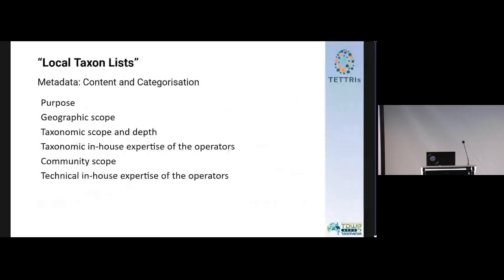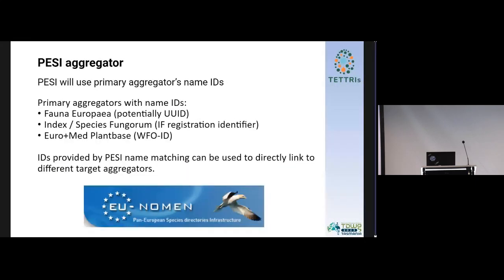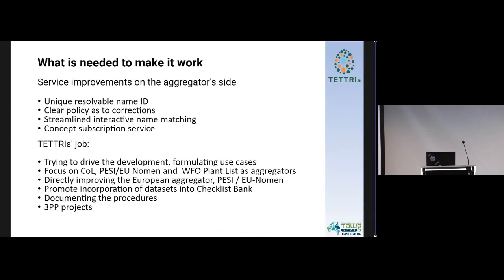We want a clear policy on correction of names — aggregators should be transparent about whether an ID changes when they do an orthographic correction or not. Ideally they would assign a new ID. There also has to be a resolvable, unique ID. I've been discussing this with Catalog of Life a lot. As far as I know, they already do have one, and it is stable according to Marcus Dering. The point is it's actually called 'name usage ID' — it was intended to be exactly that, a name usage ID which is not a name ID. But with a lot of experimentation, they found that the taxon or name usage ID is a very complicated thing to handle, so at the moment the name usage ID in Catalog of Life is actually functioning as a name ID.